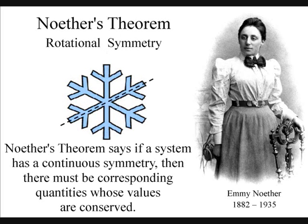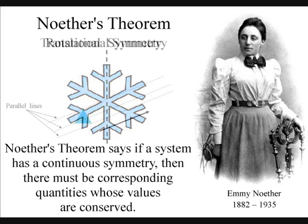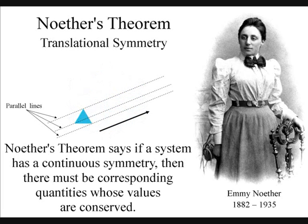There is also translational symmetry, which is not so easy to visualize. Translational symmetry basically means that if the properties of a system are parallel as they move or transfer from one place to another in three-dimensional space, their linear momentum will also remain the same.